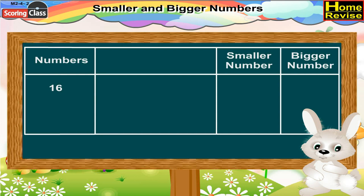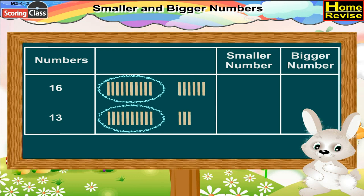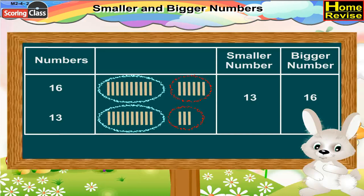Now, 16 and 13. Let us draw 16 lines for number 16 and 13 lines for number 13. Now, count 10 lines and encircle them for each. You have taken out the common group of 10 lines in each number. In number 16, 6 lines remain. In number 13, 3 lines remain. Now, 6 is bigger than 3, which means number 13 is a smaller number and number 16 is a bigger number.